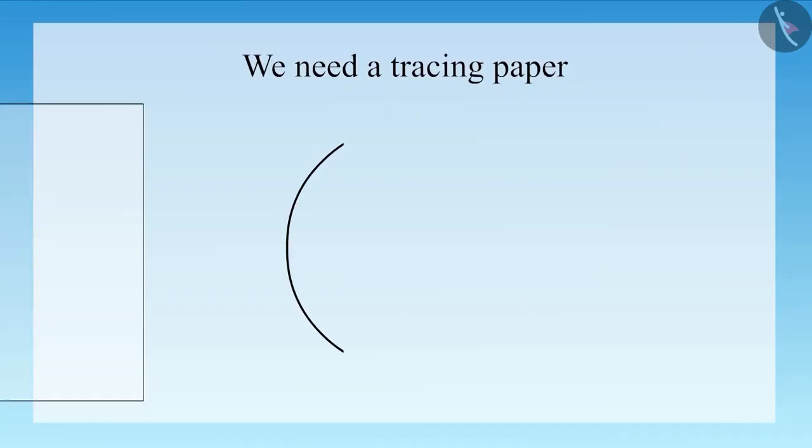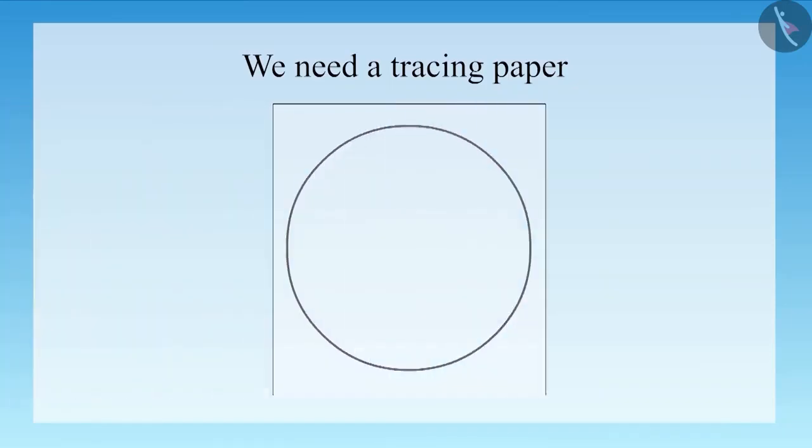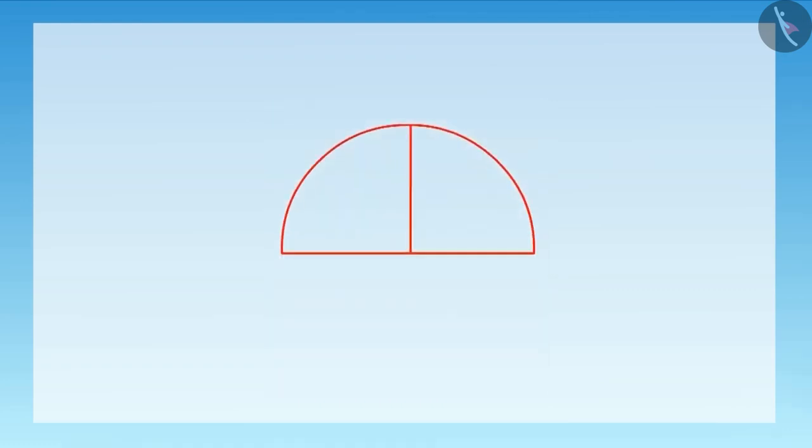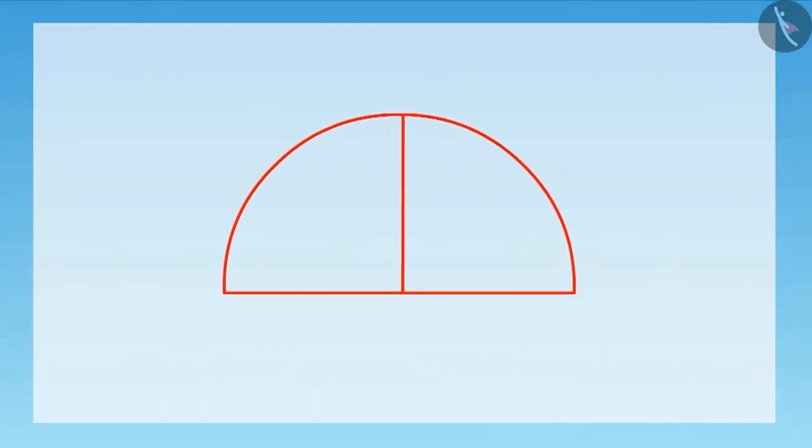First, take a tracing paper through which we can see across easily. Now, make a semicircle, that is half circle, on that paper. Divide that semicircle into two equal parts. You can see that 90 degree and 0 degree angles are being formed here.